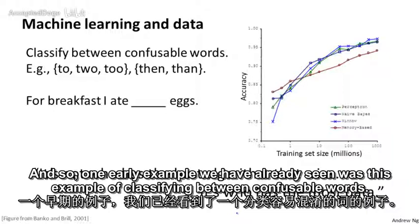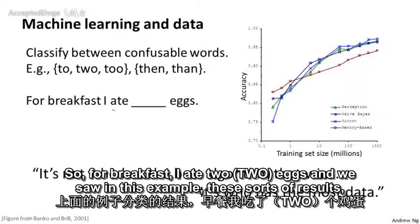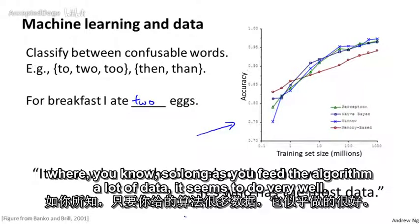And so one early example that we've already seen was this example of classifying between confusable words. So for breakfast, I ate two, T-W-O eggs. And we saw in this example these sorts of results where, so long as you feed the algorithm a lot of data, it seems to do very well.